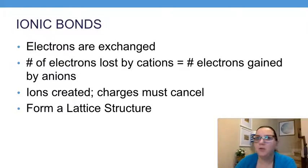In forming that ionic bond, the number of electrons lost by our cations, our positive ions, are equal to the number of electrons gained by our anions, our negative ions. We want to make sure that we don't have electrons floating around aimlessly.